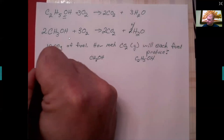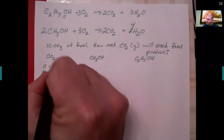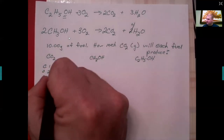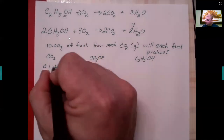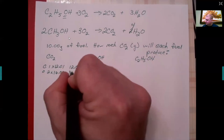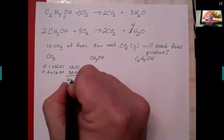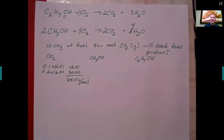We need the molar masses of CO₂, methanol, and ethanol. For CO₂: one carbon at 12.01 g/mol, two oxygens at 16.00 g/mol each — multiply across and add to find the molar mass.